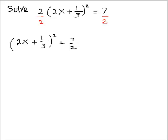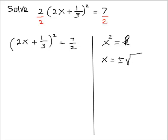Now, in general, if I have x² = k, x would be equal to ±√k. So in this case, your x is this expression here. So, 2x + 1/3 = ±√(7/2).